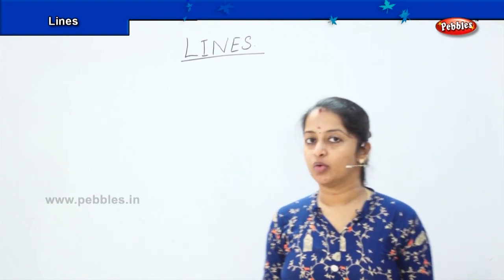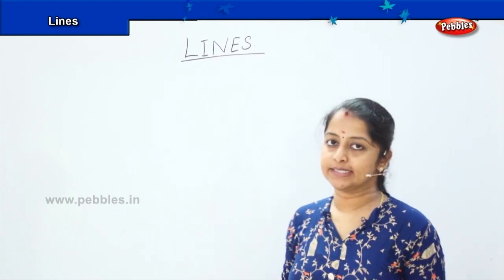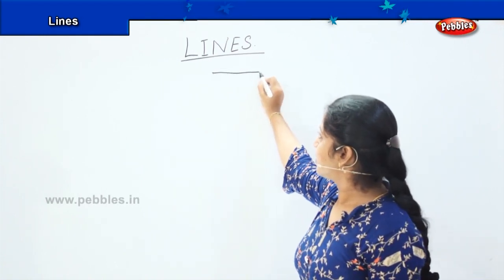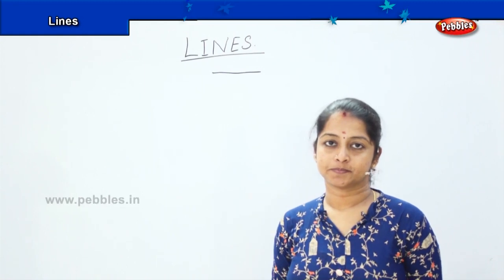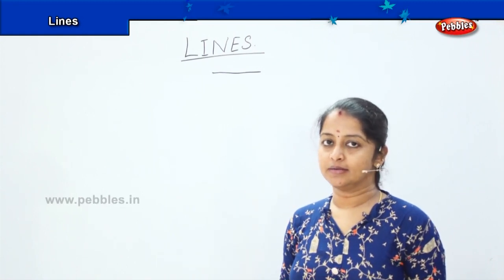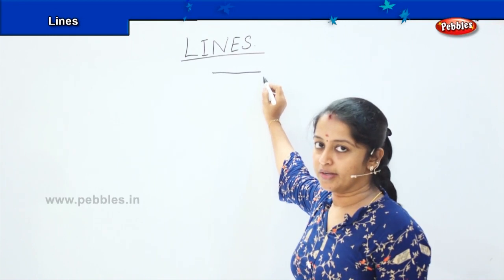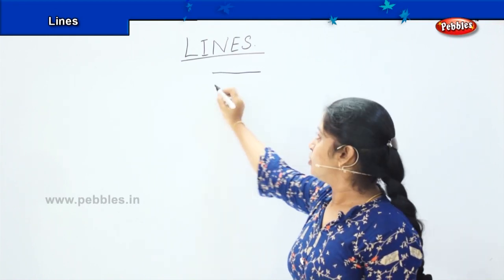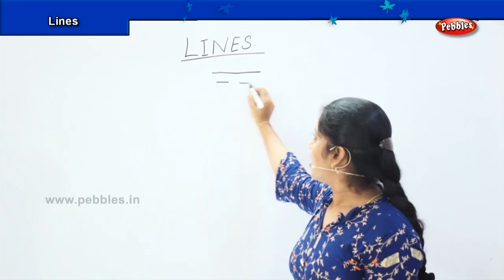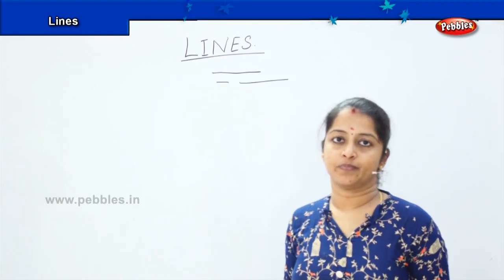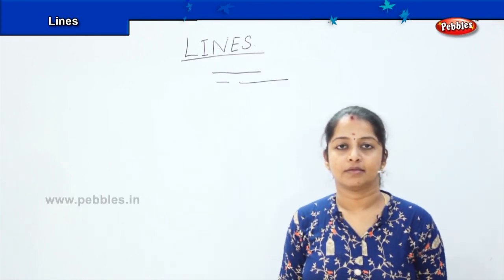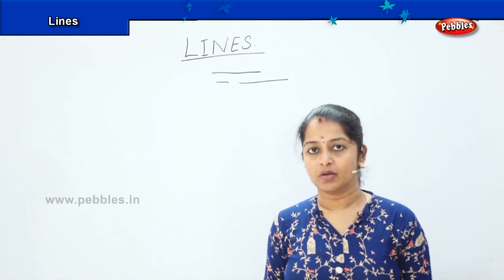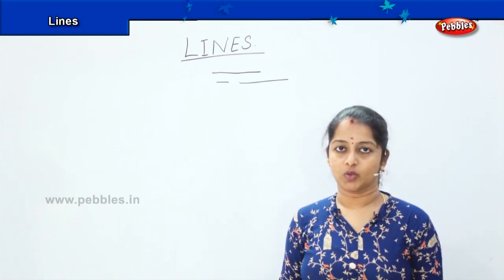The next topic we are going to do now is lines. What do you mean by a line? If I draw this, what do you call it? It's a line, right? You have a beginning point, you have an ending point. But then the length is infinity. I can draw a small line, I can draw a big line — it's up to me. A line is a straight ray which is formed when we use a pencil or a pen.